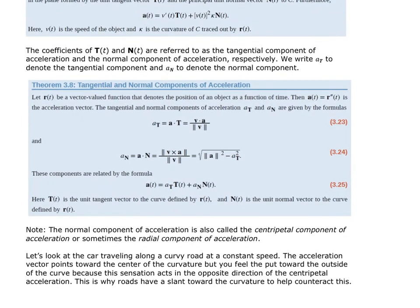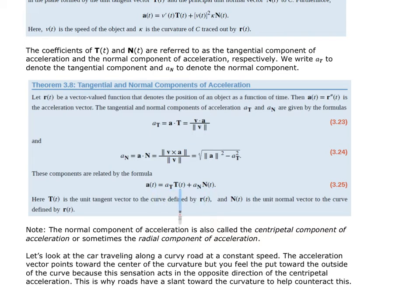We can then write the acceleration as: a(t) = A_T times the unit tangent vector plus A_N times the unit normal vector. These are scalars multiplying the unit vectors, giving us a way to write acceleration in terms of the unit tangent and unit normal vectors.